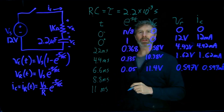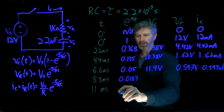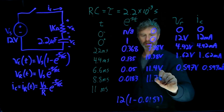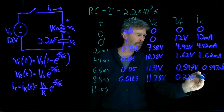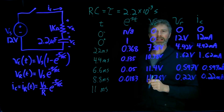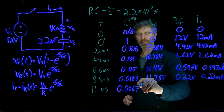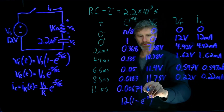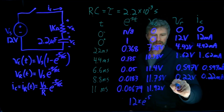At 8.8 milliseconds, we have 8.8 over 2.2, giving e to the minus 4, which is 0.0183. So Vc will be 12 times 1 minus 0.0183, giving 11.78 volts across the capacitor. And finally at 11 milliseconds, 11 over 2.2 gives 5, so we're at e to the minus 5, which is 0.00674. That means Vc is 12 times 1 minus e to the minus 5, which gets us up to 11.92 volts.